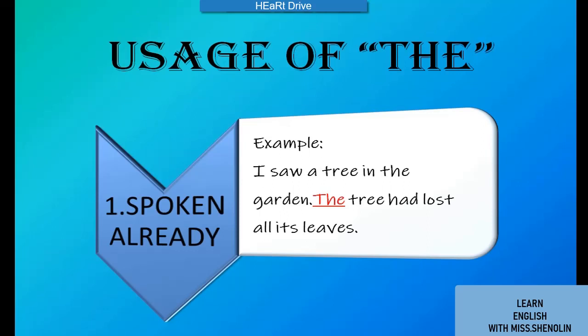In the first sentence, we had already spoken about a tree. When we repeat the same thing, we use the article 'the.' So we say 'the tree had lost all its leaves' — we have to use 'the tree.'